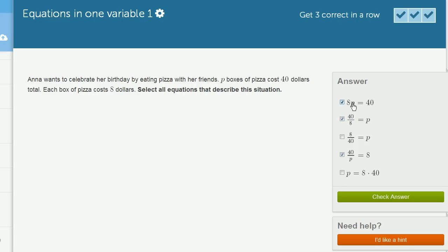Right up here, if you divide both sides by P, on the left-hand side you have 8P divided by P, which would be 8. And on the right-hand side, 40 divided by P is just 40 divided by P. So it's the same exact thing.